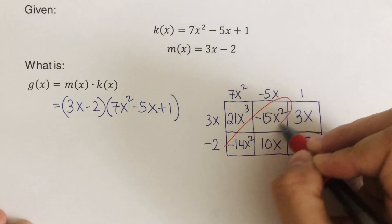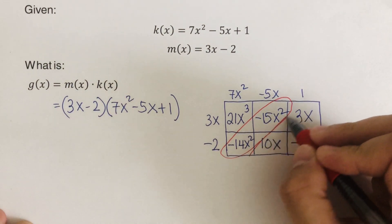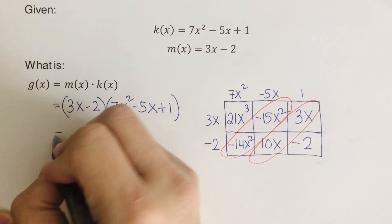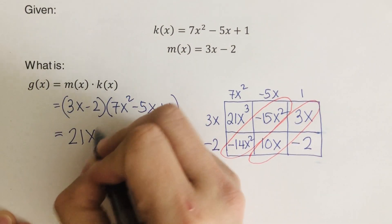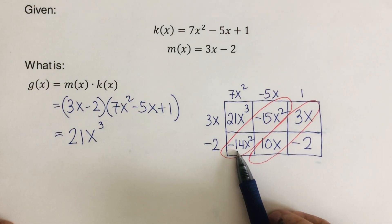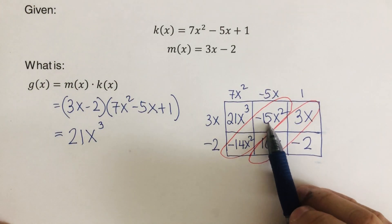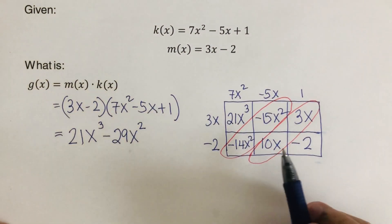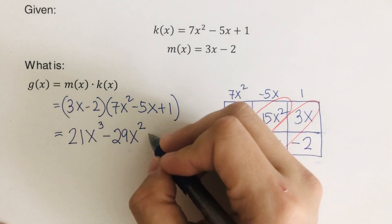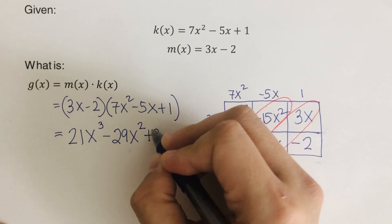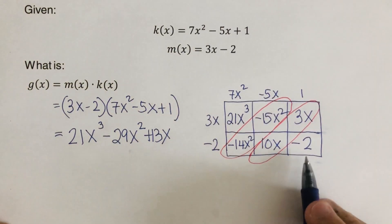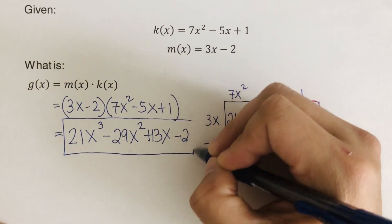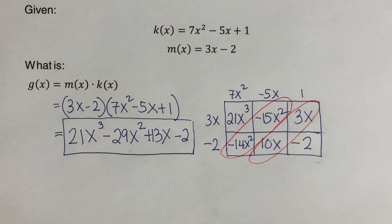The diagonals in the area model are like terms. Combining: 21x cubed is by itself; negative 14x squared minus 15x squared is negative 29x squared; 10x plus 3x is 13x; and the constant is negative 2. So g of x equals 21x cubed minus 29x squared plus 13x minus 2, which is the product of k of x and m of x.